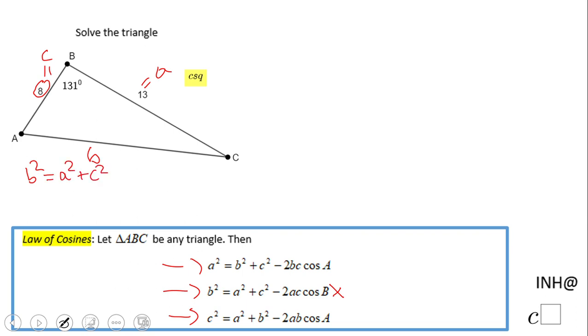Let's plug the values in. We have b² and a² is 13², which is 169. c² is 8², which is 64, minus two times 13 times 8, which is 208, times cosine of 131 degrees.